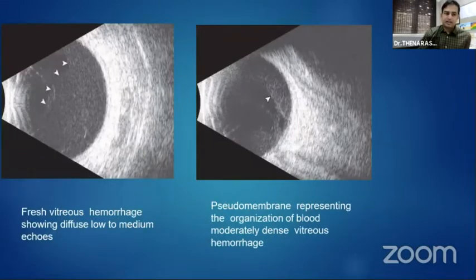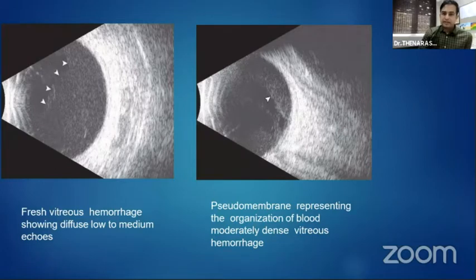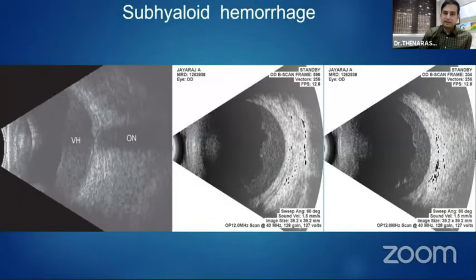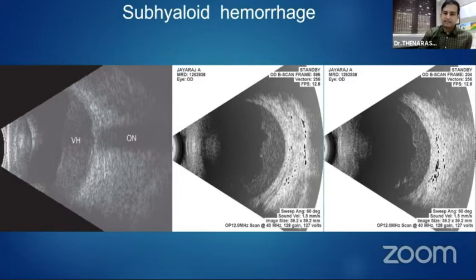The first picture shows a fresh vitreous hemorrhage with low-to-medium moderate vitreous echoes, whereas the second picture shows liquefied vitreous with pseudomembrane formation. On ultrasound we can detect whether the vitreous hemorrhage is fresh or old. In diabetic vitreous hemorrhage we can notice sub-hyaloid hemorrhage — there is moderate-to-severe vitreous dot echoes behind the vitreous and in front of the retina. Sub-hyaloid hemorrhage is a definite indication for surgery.